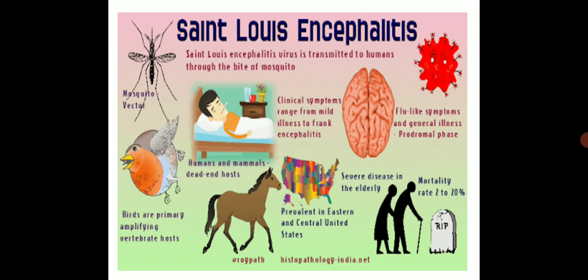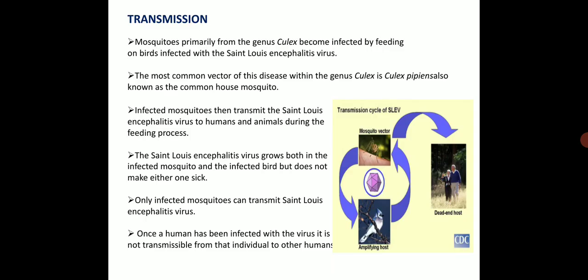This disease is prevalent in the Eastern and Central United States. It is severe in elderly persons and the mortality rate is about 5 to 20 percent. The common vector is the Culex, or common house mosquito. The infected mosquito transmits St. Louis encephalitis virus to humans and animals during the feeding process. The virus grows in both the infected mosquito and the infected bird but does not make either one sick. Only an infected mosquito can transmit St. Louis encephalitis virus. Once a human has been infected, the virus is not transmissible from that individual to other humans.